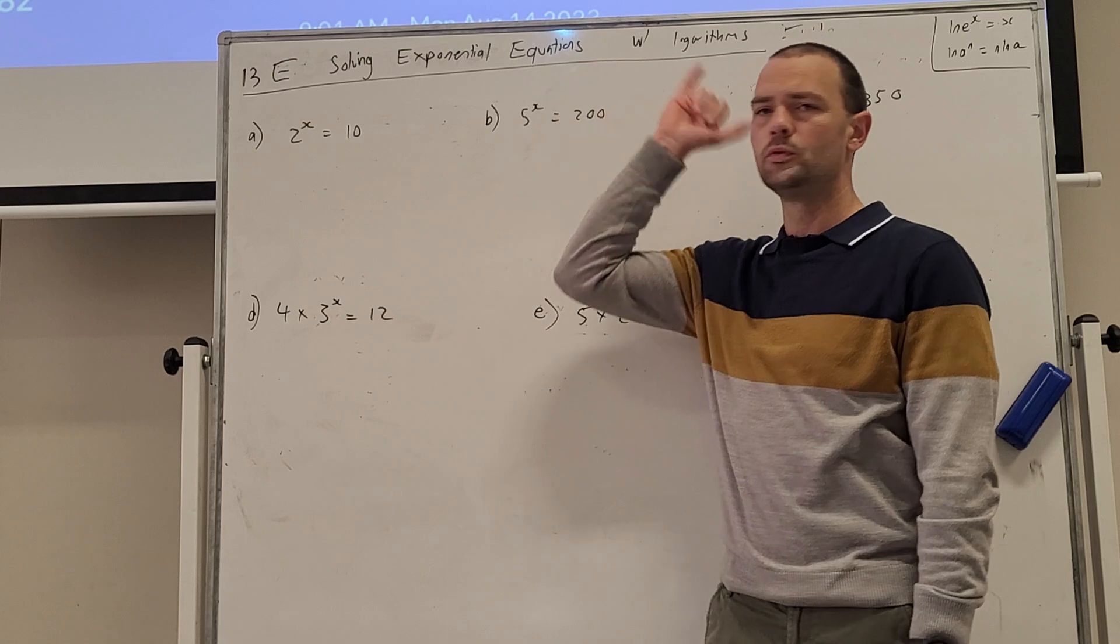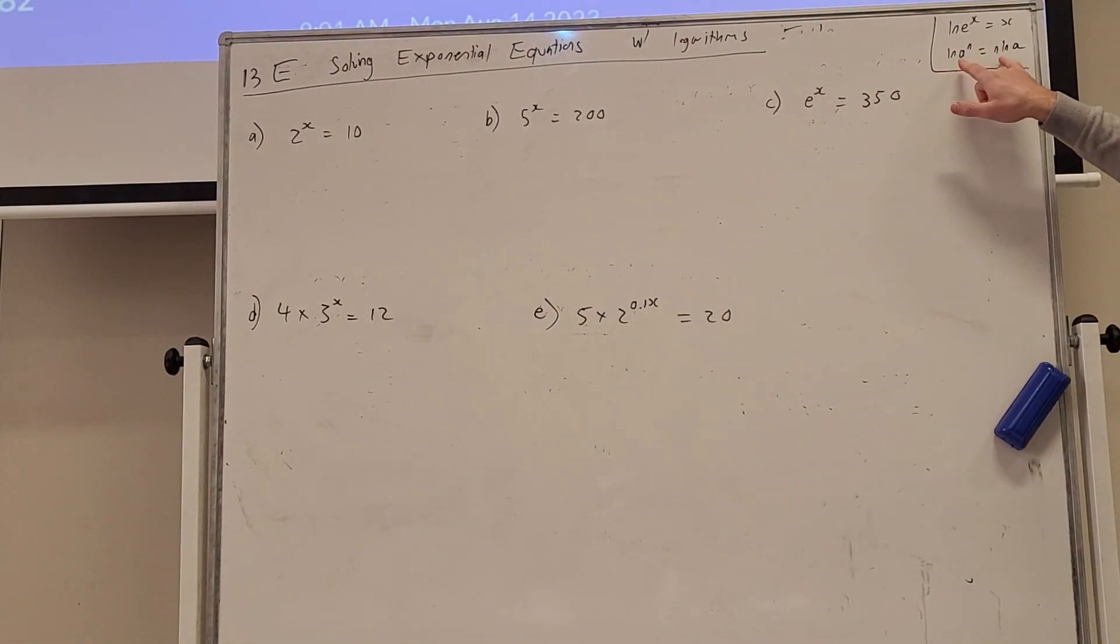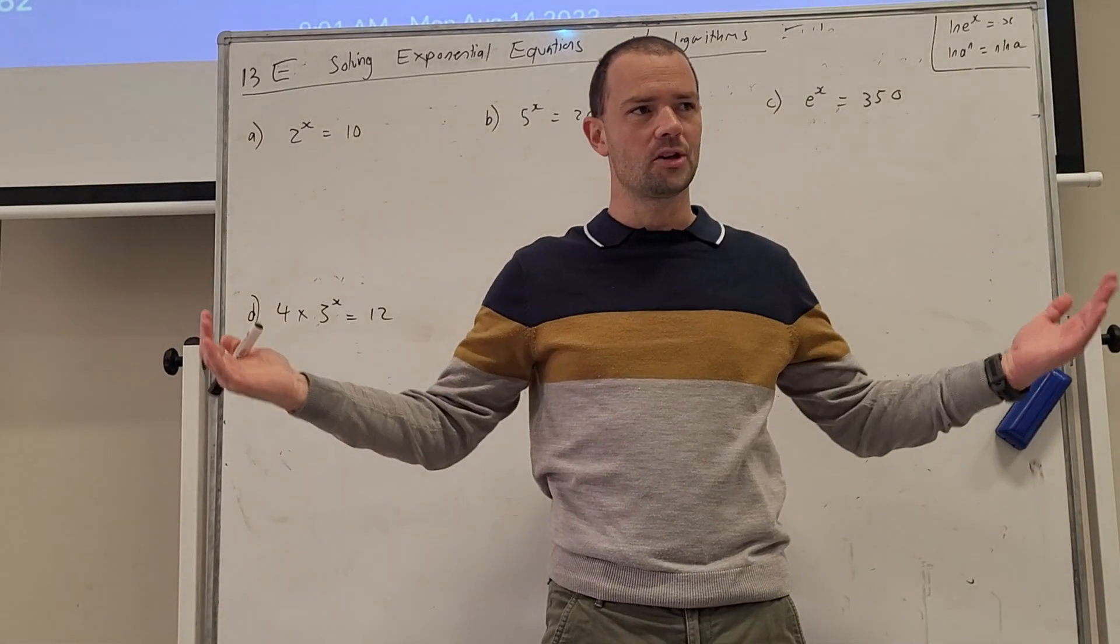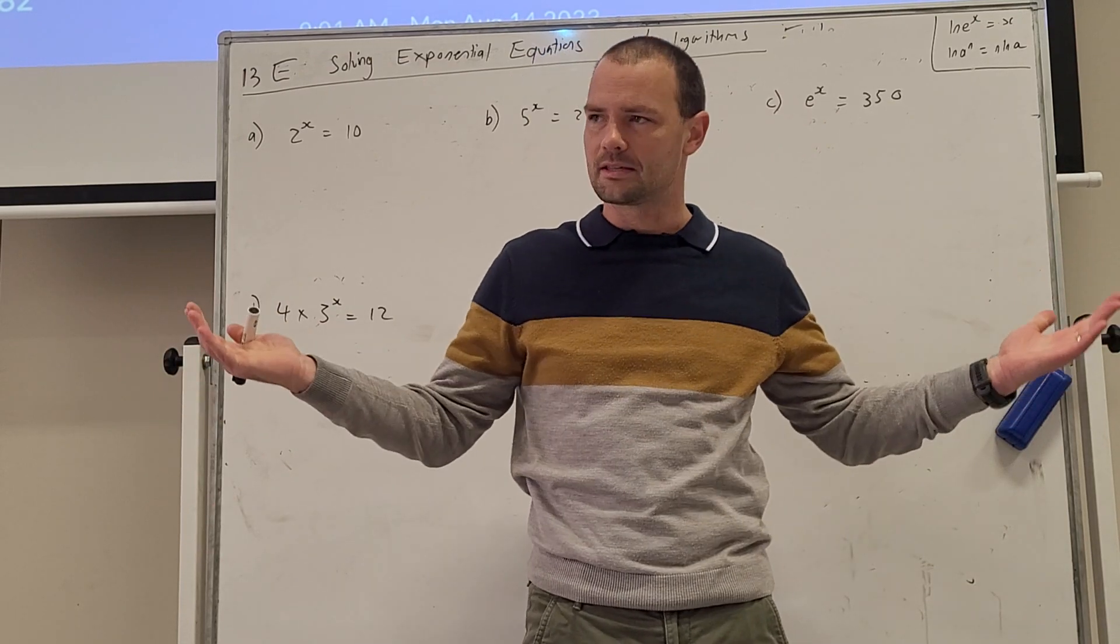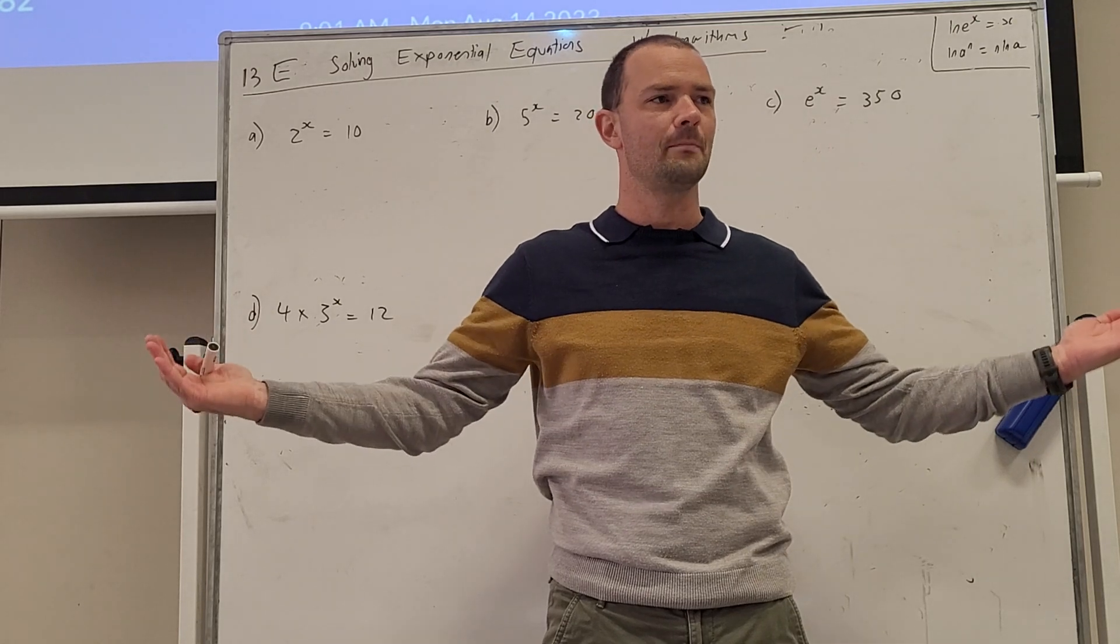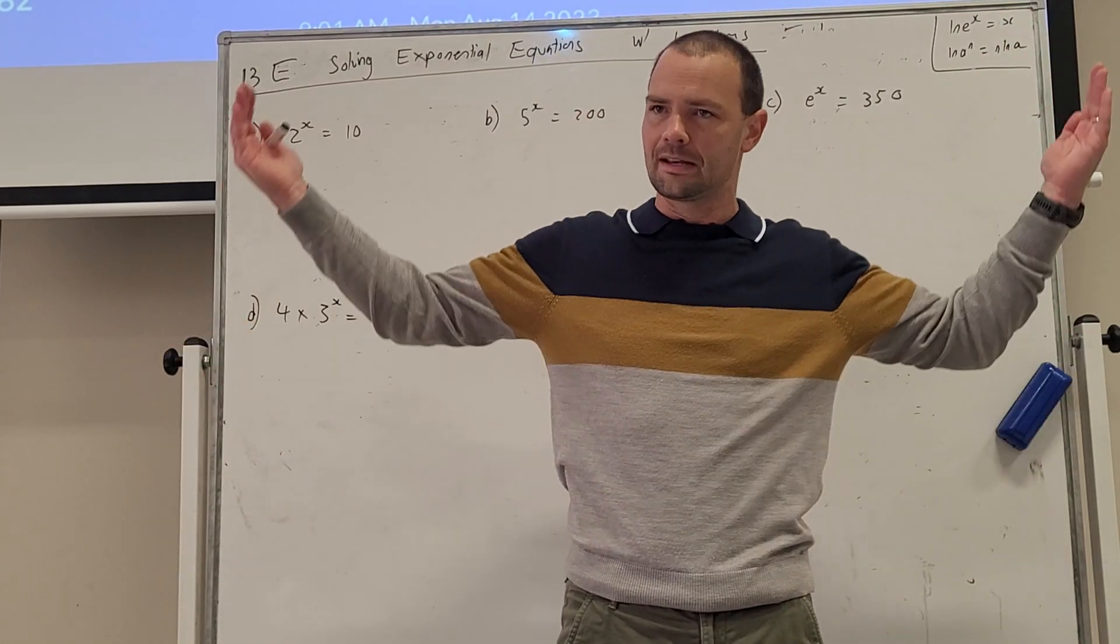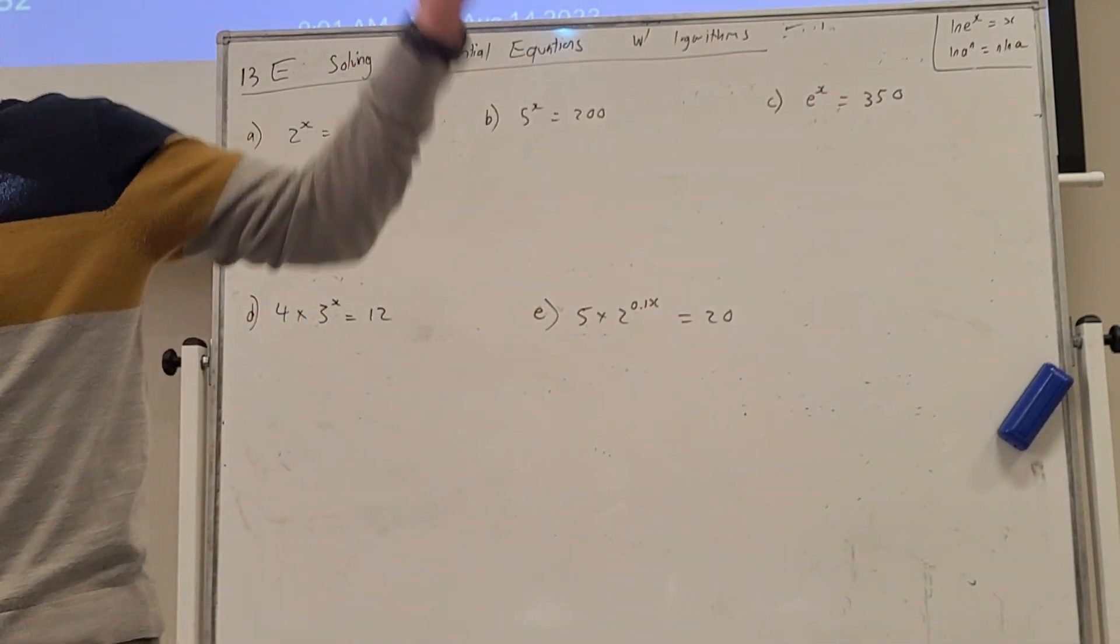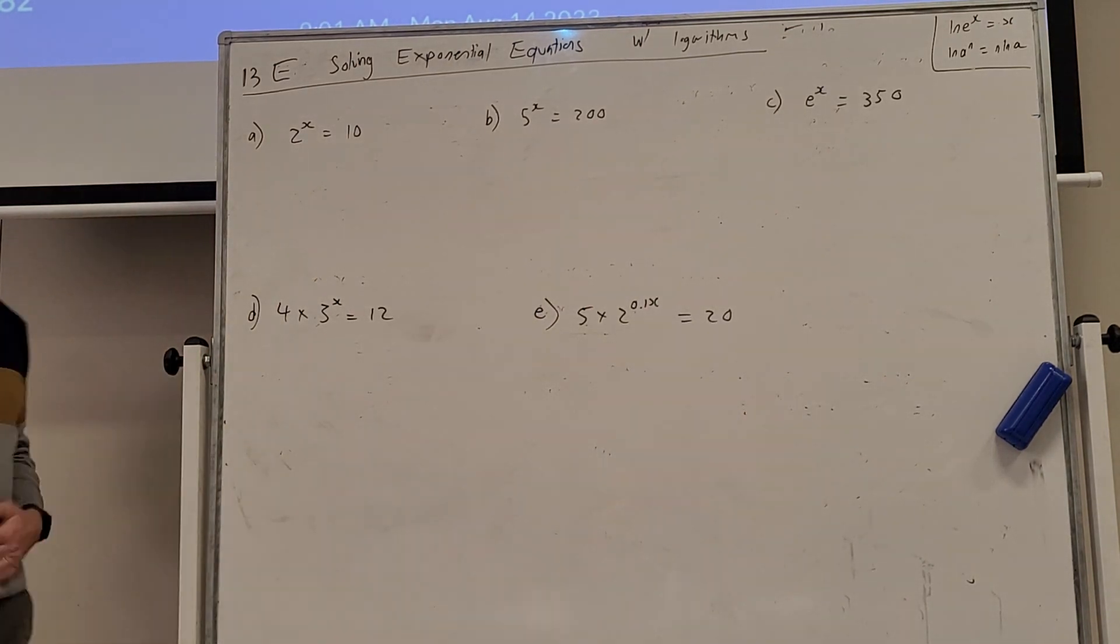What we're going to do here is use logarithms and we're using particularly this rule of logarithms. Now the number one rule when we're solving equations is you can do anything as long as you do it to both sides of the equation, right? We learn that in sort of like year 8 maths, it's like a scale, it has to be balanced. And whatever you do to the left-hand side, you have to do to the right-hand side to maintain balance. So you can do anything, you can plus 5 to both sides, you can take 1,000 from both sides, as long as you do it to both sides.